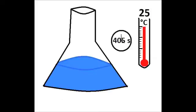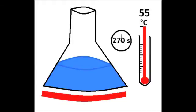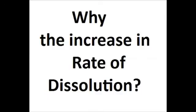Next, we added heat, raising the temperature to an average of 55 degrees Celsius. At this new temperature, it took 270 seconds, or 4 minutes and 30 seconds, for the sugar cube to dissolve, which is 198 seconds faster than at room temperature.